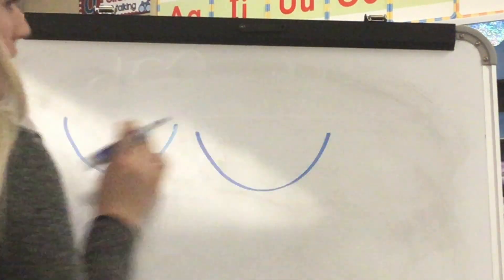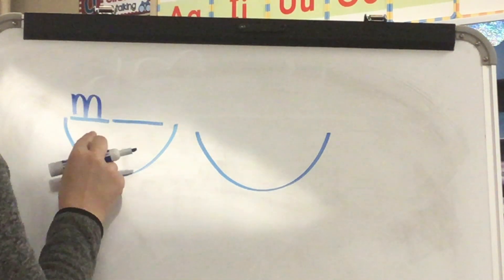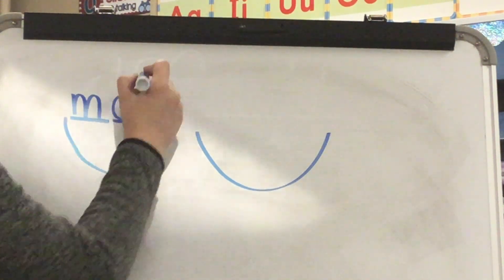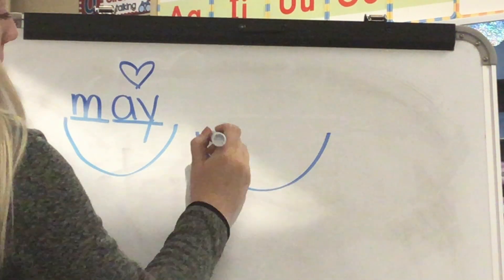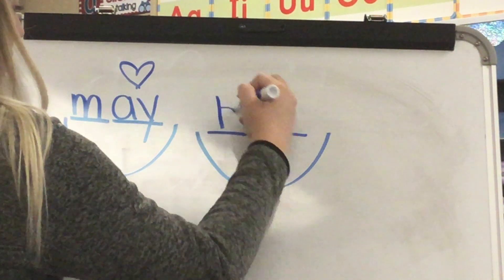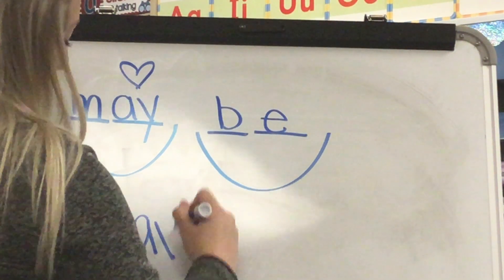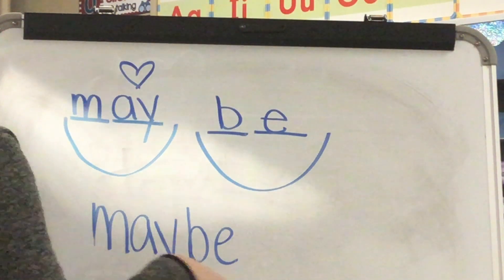Our next word is maybe. What word? Maybe. Say the syllables in maybe: may-be. Let's stretch our syllables: may-be. Stretch the first syllable: M-A. A in maybe is spelled A-Y — that's a tricky part of maybe you have to know by heart. May-be. Stretch B: B-E. Final sound: E. Yes, E. This is the word maybe. What word? Maybe. Spell maybe: M-A-Y-B-E. Word? Maybe. Yes, maybe.